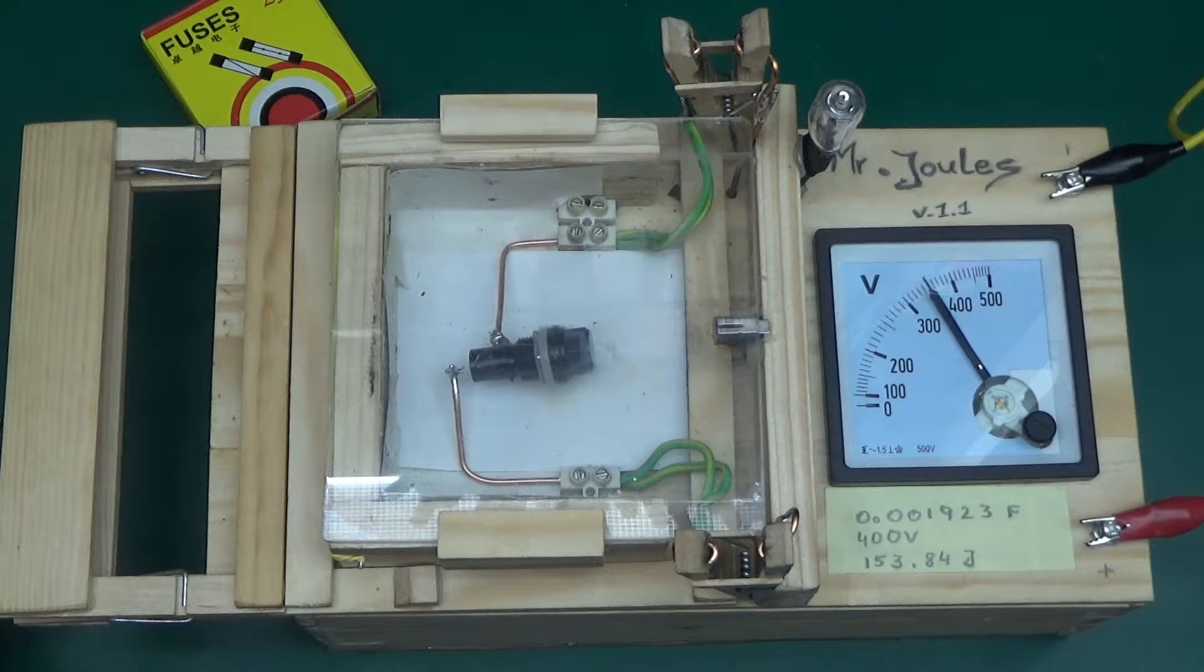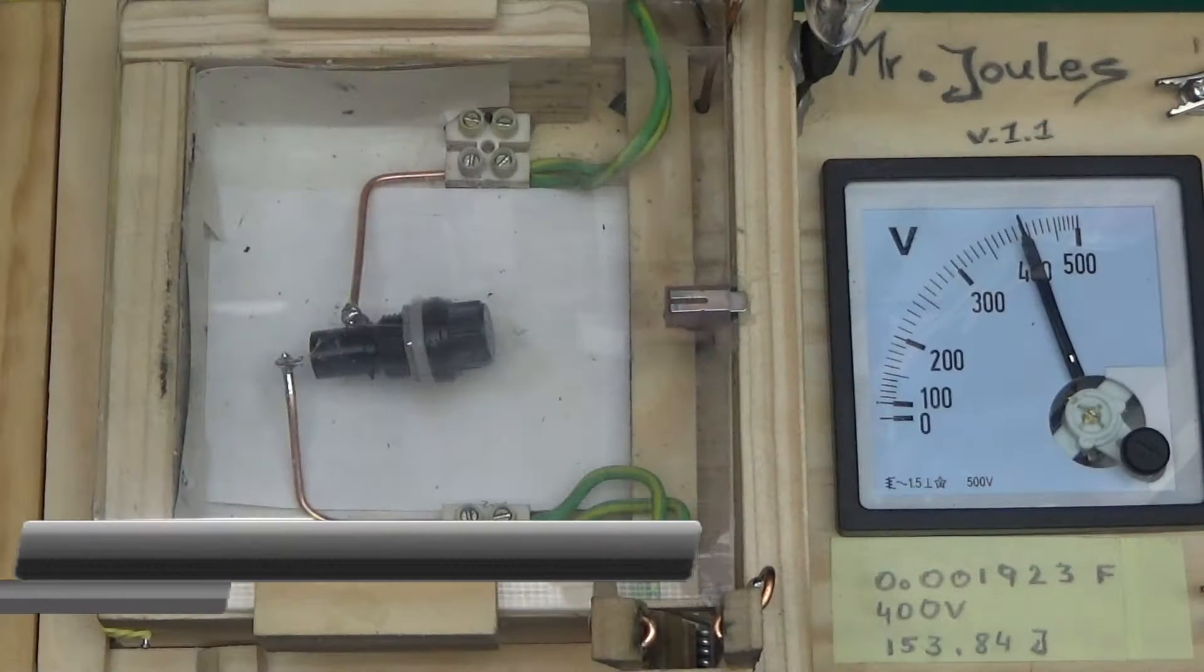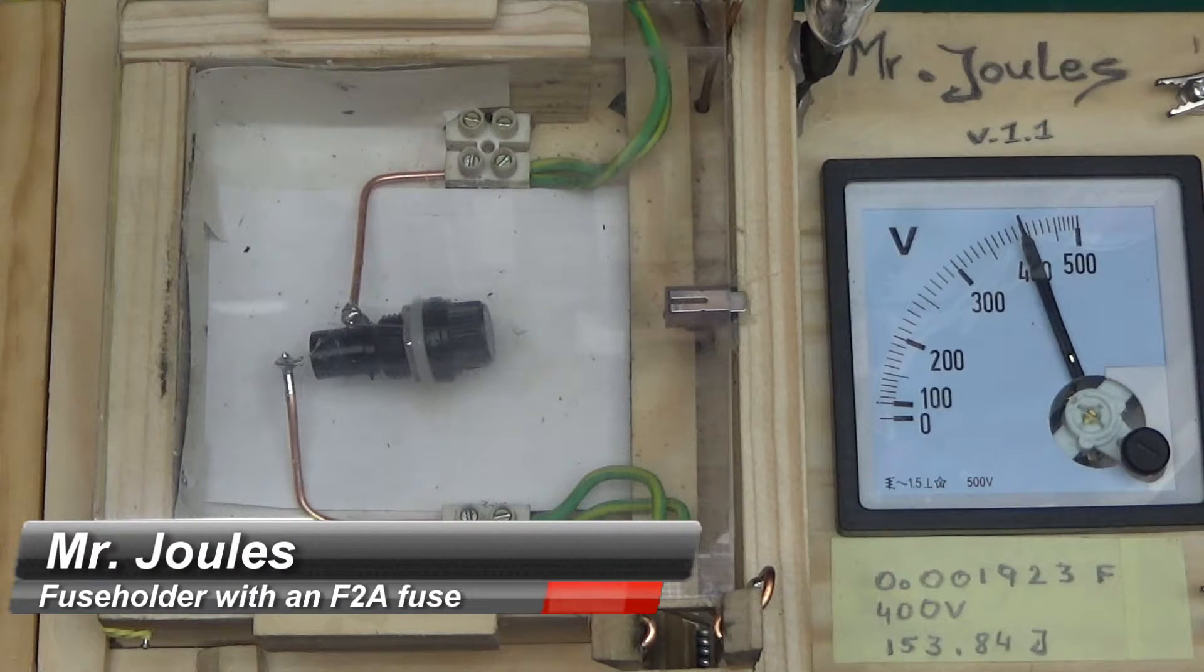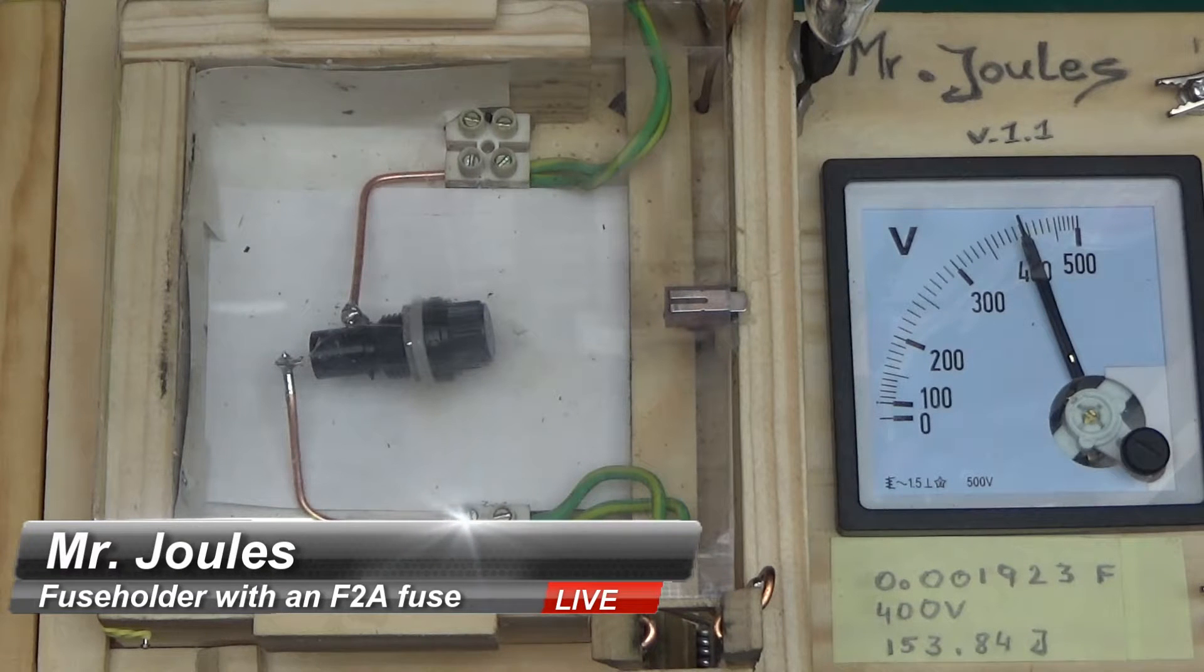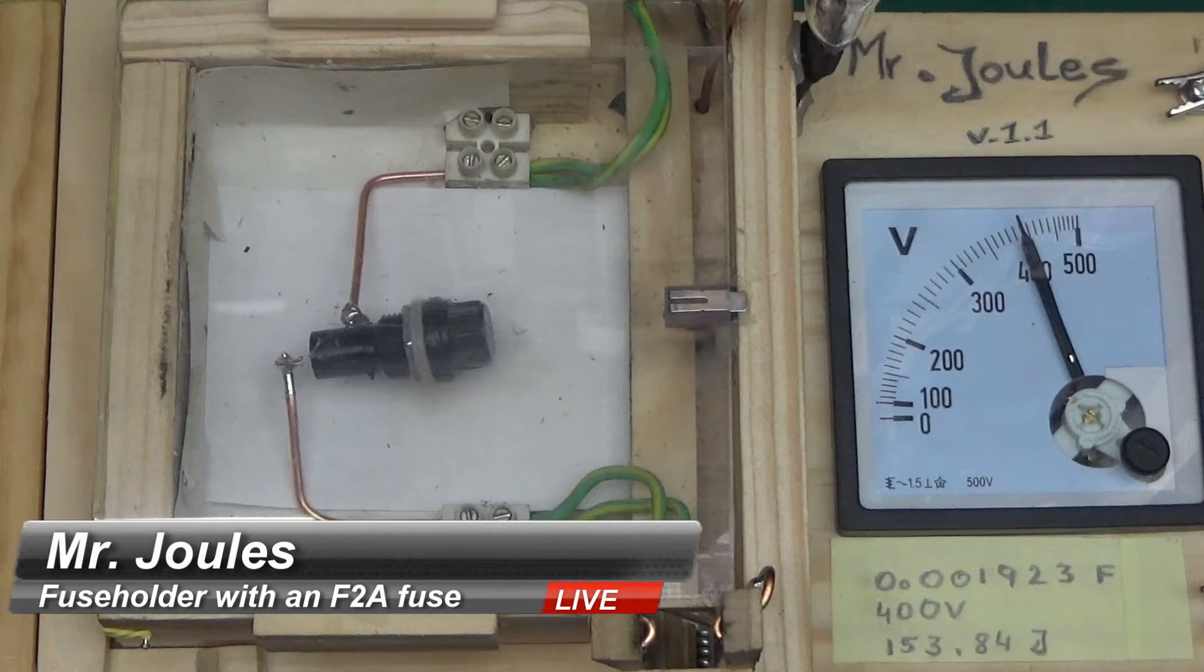Now Mr. Joules is charging promptly to nominal 400 volts. This is a fuse holder with a 2A fast blowing fuse in Mr. Joules. Will it explode in 3, 2, 1.